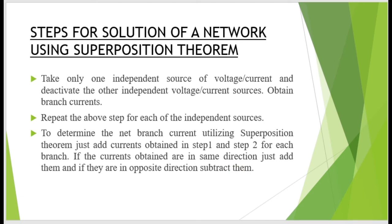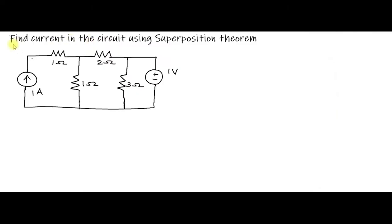Let's go through the superposition theorem by means of some examples. Find the current in the circuit using superposition theorem. Here there are two sources: one is a current source and another is a voltage source. The principle of superposition states that first you take either the current source or voltage source only. Here we apply superposition by taking the 1 volt source only first.